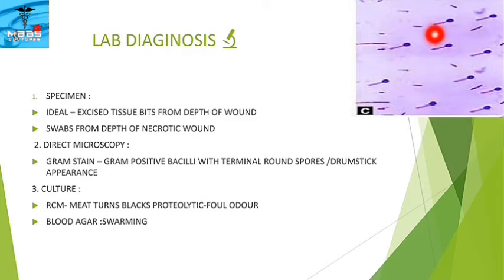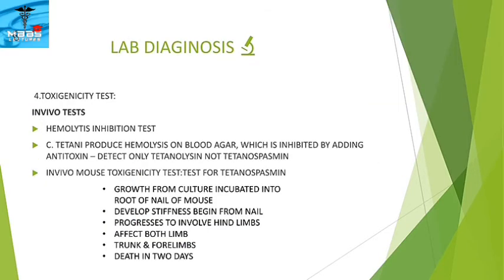For culture, the organism is grown in RCM medium, producing mid-trans black proteolytic foul odor. On blood agar, characteristic growth is observed. For toxigenicity testing, the in vitro test is the hemolytic inhibition test, where Clostridium tetani produces hemolysis on blood agar which is inhibited by adding anti-toxin; this detects only tetanolysin, not tetanospasmin. The in vivo mouse toxigenicity test is used to test for tetanospasmin, where growth is inoculated into the tail vein of a mouse.